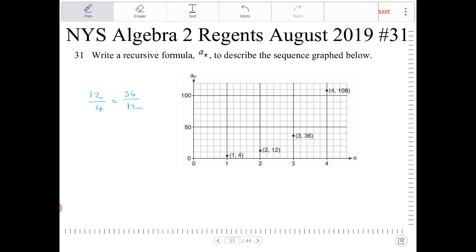And it does, because 12 over 4 is 3, and 36 over 12 is also 3. So that checks out. So the ratio then is going to be 3.